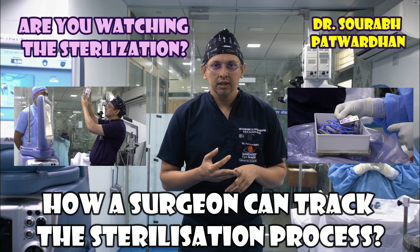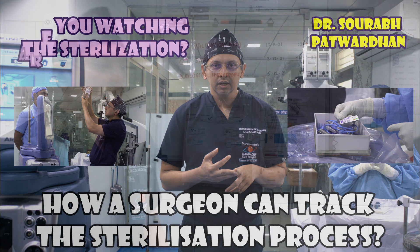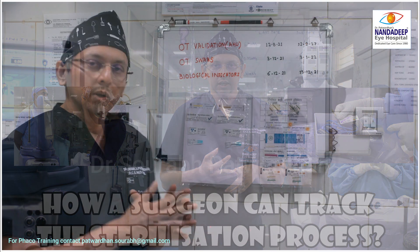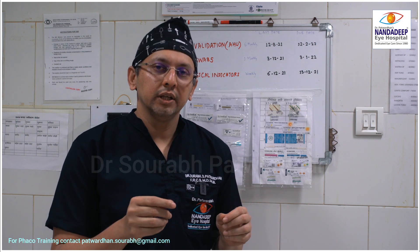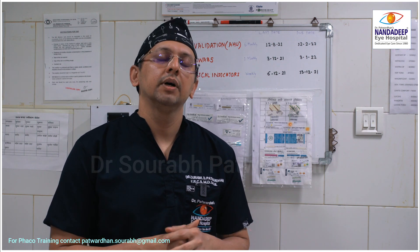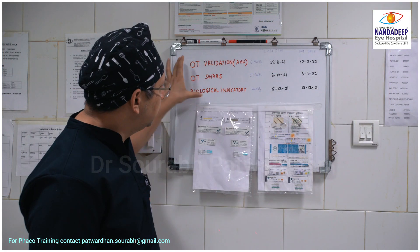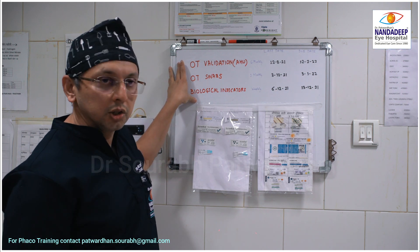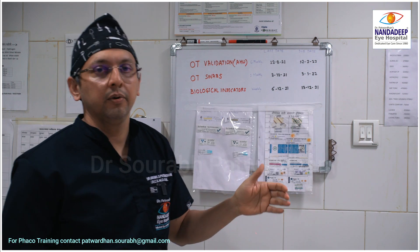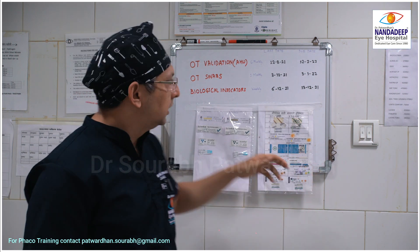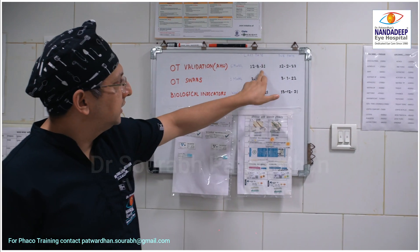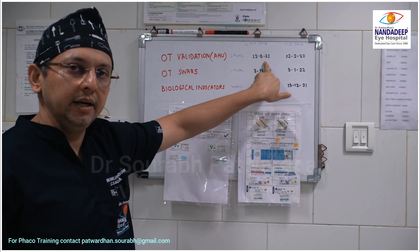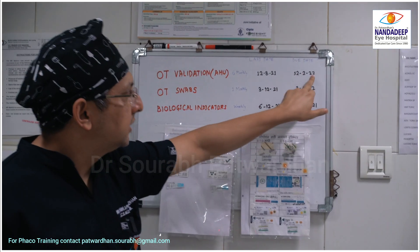How can a surgeon track the sterilization process? As a surgeon when I enter the operating room, there are a few things which we must notice. These are very important things so that our surgeries are safe for our patients. The first thing is the OT validation — you can see the last date when it was validated and the due date.